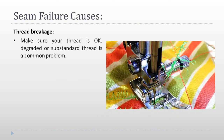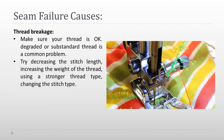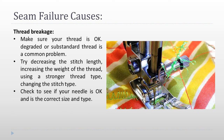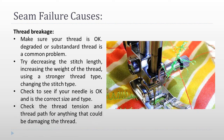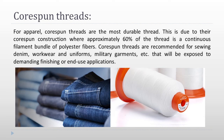Thread breakage: make sure your thread is okay — degraded or substandard thread is a common problem. Try decreasing the stitch length, increasing the weight of the thread, using a stronger thread type, or changing the stitch type. Check to see if your needle is the correct size and type, and check the thread tension and thread path for anything that could be damaging the thread. Corespun threads: for apparel, corespun threads are the most durable thread. This is due to their corespun construction where approximately 60% of the thread is a continuous filament bundle of polyester fibers. Corespun threads are recommended for sewing denim, workwear, uniforms, and military garments that will be exposed to demanding finishing or end-use applications.